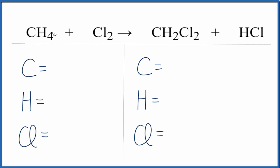In this equation, we have CH4, which is methane, plus chlorine gas, and that's giving us dichloromethane plus hydrochloric acid.